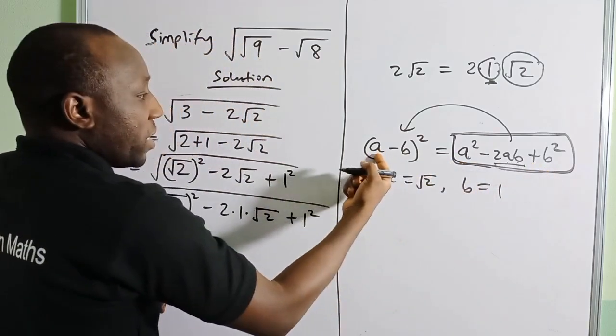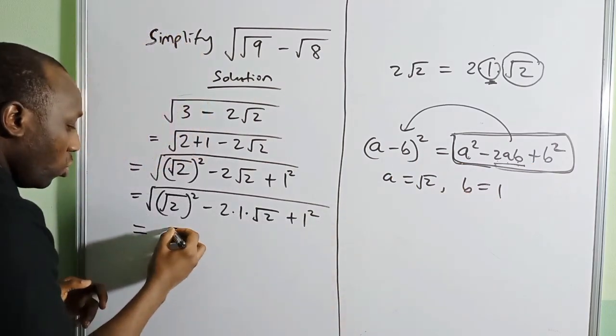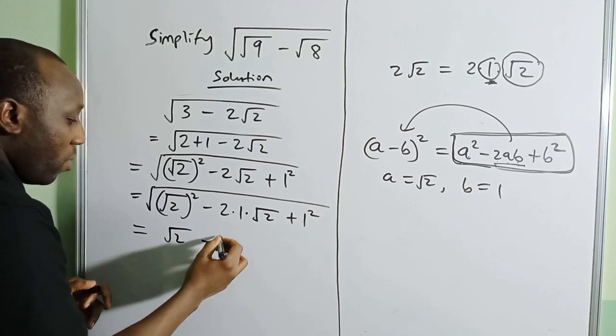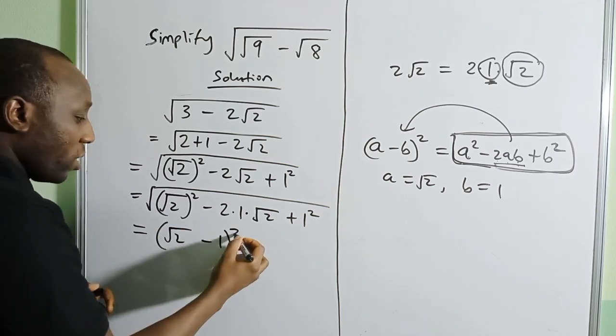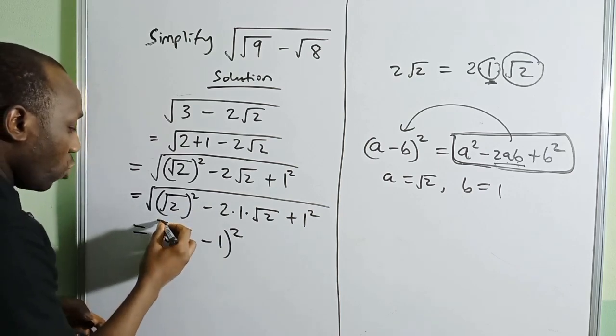If you expand this, it gives you back this. But we have the square root on it: √[(√2 - 1)²].